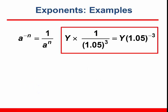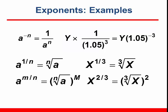In this first example, 1 over 1.05 raised to the third power is the same as 1.05 raised to the minus third power. A value quantity raised to a fraction involves a root. So x raised to the one-third power is equal to the cube root of x. x raised to the two-thirds power is the cube root of x squared.